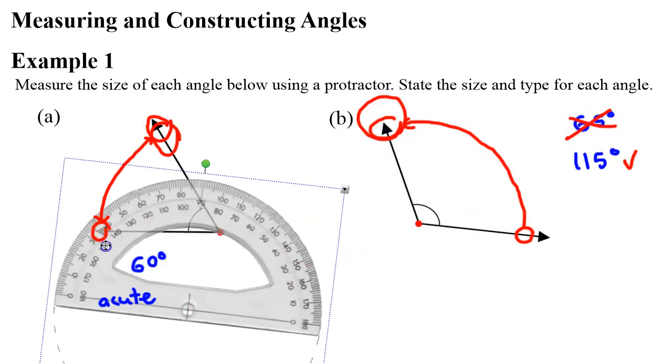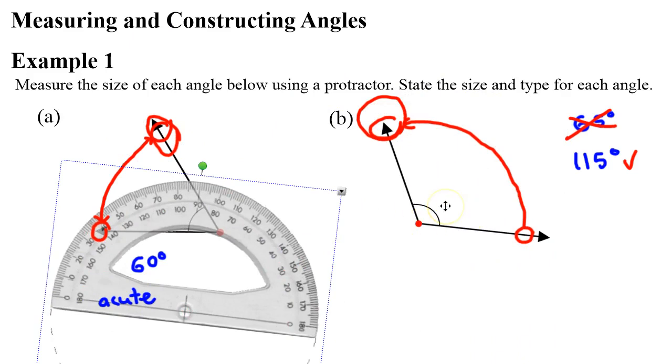You'll also notice when we look at this angle, this is larger than 90 degrees, which means it's an obtuse angle. Obtuse angles are between 90 and 180 degrees.